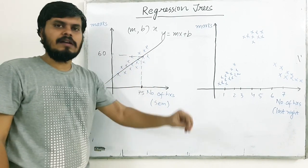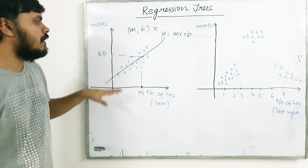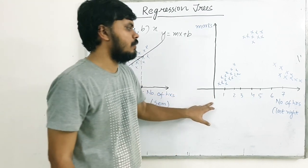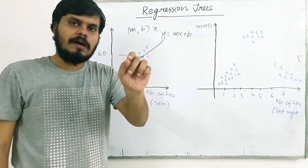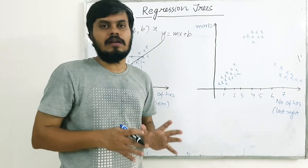Agar linear relationship hai, linear regression lagayenge, aur, is tarike se hum answer de lenge, right? But, kabhi kabhi data mein linear relationship nahi hota. Jaise ki yeh data, dekho. Yeh bhi data similar hai, there is only one difference, ki is mein number of hours jo hai, woh exam ke ek raat pehle ka number hai. Thik hai, ki exam ke ek raat pehle student ne kitna padhai kiya.